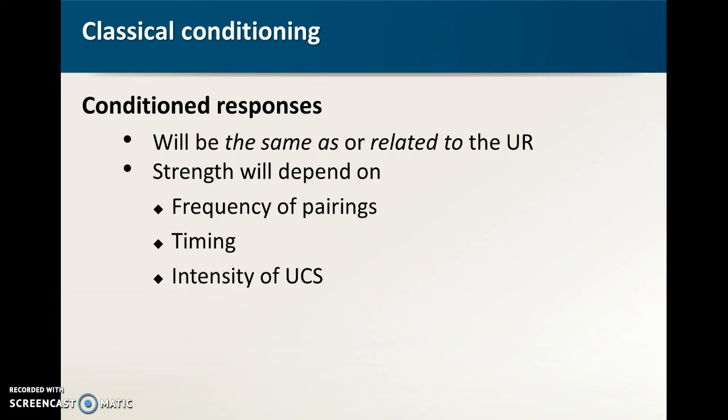Okay so how strong the conditioned response will be will depend on frequency of pairings. You know do you clap your hands and turn off the lights 20 times or do you do it 20,000 times. It would be a whole lot stronger response. It will also depend on timing so you want to clap your hands and then turn the lights off. You don't clap your hands wait five minutes and then turn the lights off. And then finally the intensity of that unconditioned stimulus. You know if you clap your hands and turn the lights off that darkness that's a relatively mild stimulus. It's gonna take a while to learn that relationship. Whereas if you were to clap your hands and then taser somebody they're gonna learn really fast to get nervous when you clap your hands. But because it is such an intense stimulus it's probably only gonna take one trial before they develop that conditioned response.